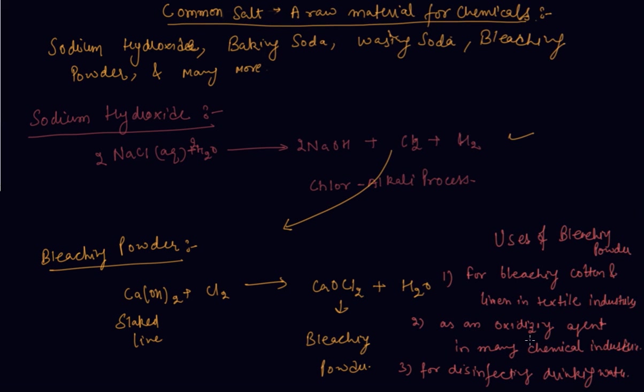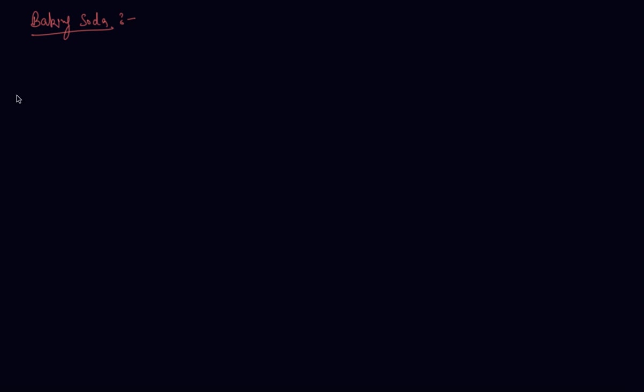Now let's come to baking soda. The soda commonly used in the kitchen for making tasty crispy pakoras is baking soda. Sometimes it is added for fast cooking. The chemical name of the compound is NaHCO3 sodium hydrogen carbonate.